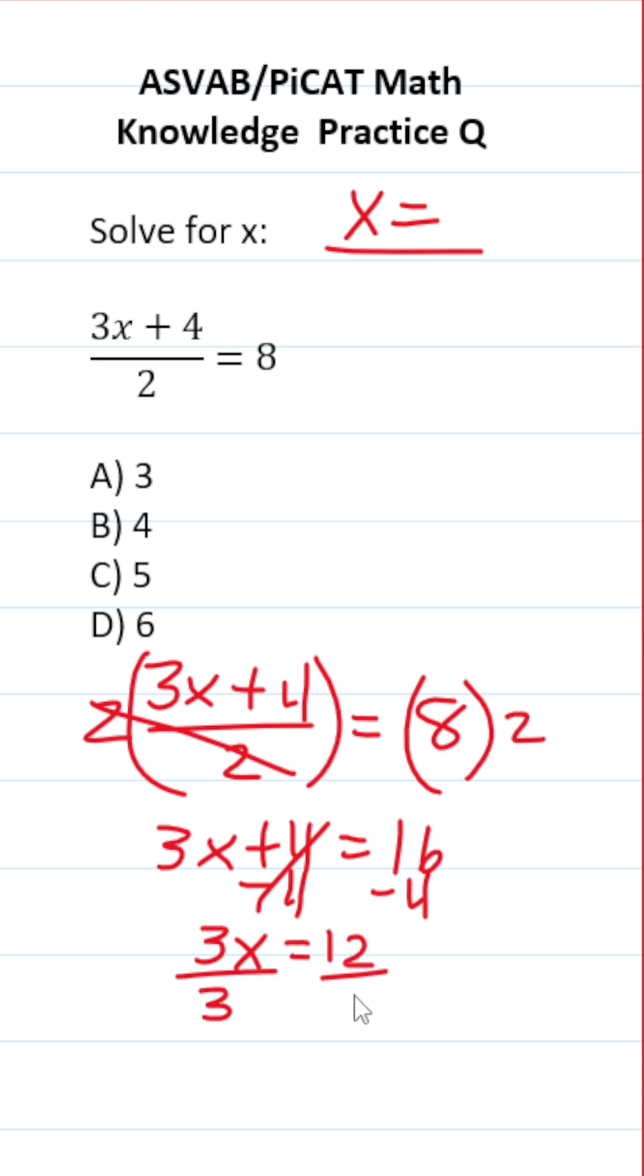To get x by itself, we're going to divide both sides by 3 now. This says x equals 12 divided by 3, which is 4. If you quickly want to check your work,